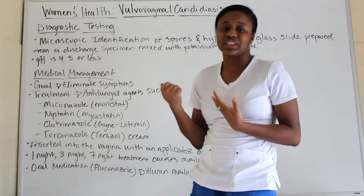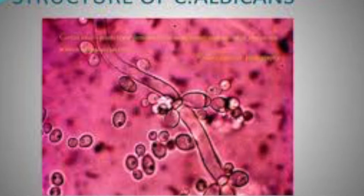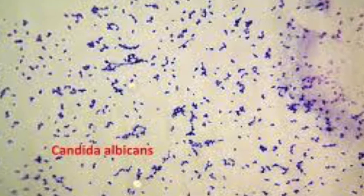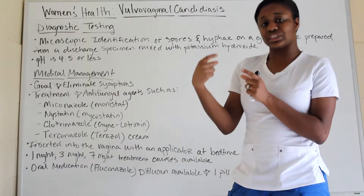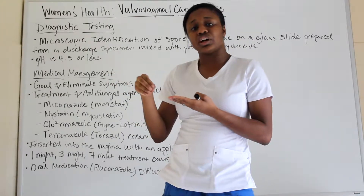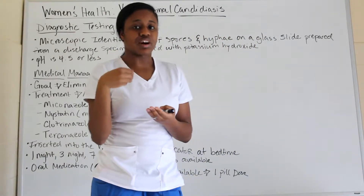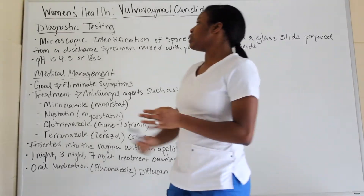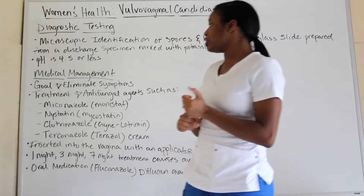For diagnostic testing of a yeast infection, you perform microscopic identification of spores and hyphae on a glass slide. A discharge specimen is prepared by mixing it with potassium hydroxide — you get some of the vaginal discharge, make a smear on a glass slide, drop some potassium hydroxide on it, and view it under the microscope. The pH level will be 4.5 or less.